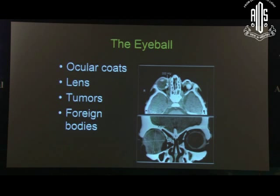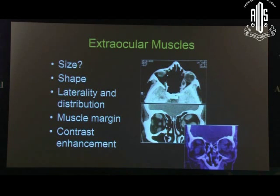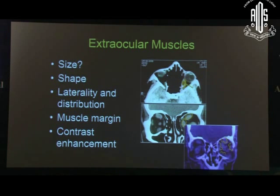Look at the ocular coats — for example, beyond calcification, is there anything in the ocular coat itself? Is the sclera thickened? Is there extrascleral extension in retinoblastoma or in a patient with melanoma — has the tumour come out of the eye into the orbit? In extraocular muscles, shape is very important. Uniformly enlarged extraocular muscle most likely indicates thyroid orbitopathy. An enlarged muscle belly with a cyst inside indicates cysticercosis. A moth-eaten appearance of the extraocular muscle bilaterally with preseptal and orbital involvement is classic for xanthogranuloma of the orbit.